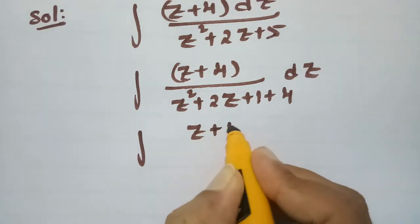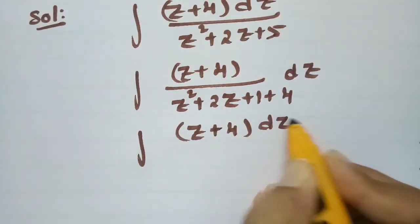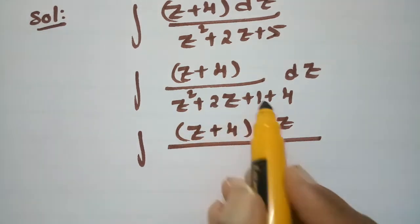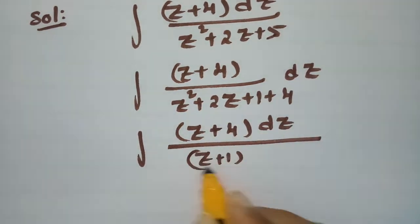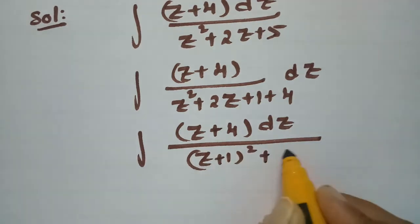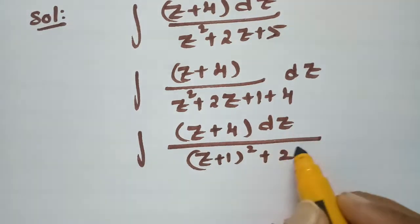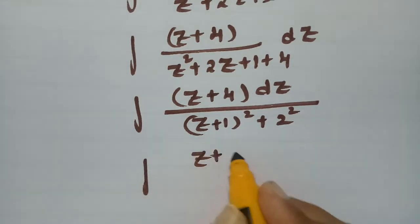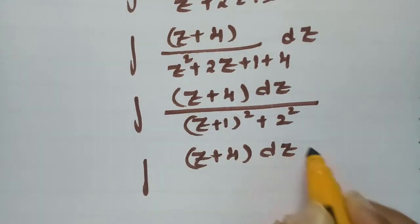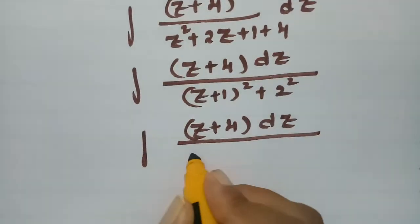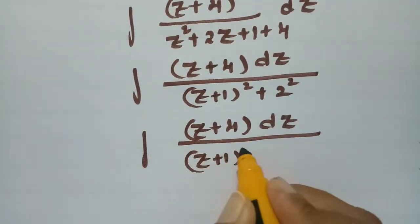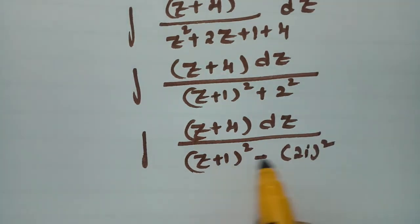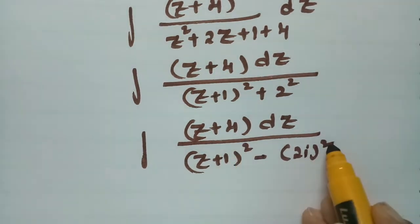This is of the form a²+2ab+b², so I can write the denominator as (z+1)²+2². Now I need this in the form a²−b², so I'm transforming it as (z+1)²−(2i)².